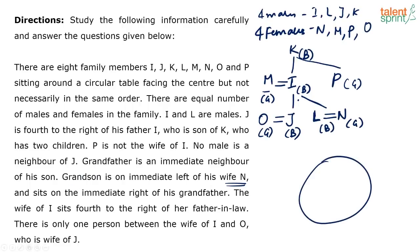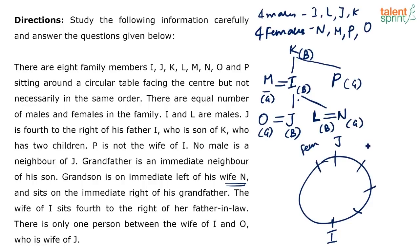Now let's do the arrangement. J is 4th to the right of his father I — so I fix I on the circle, count 4 positions to the right, and place J there. Everybody is facing the centre. No male is a neighbour of J, so the two people adjacent to J must be female.